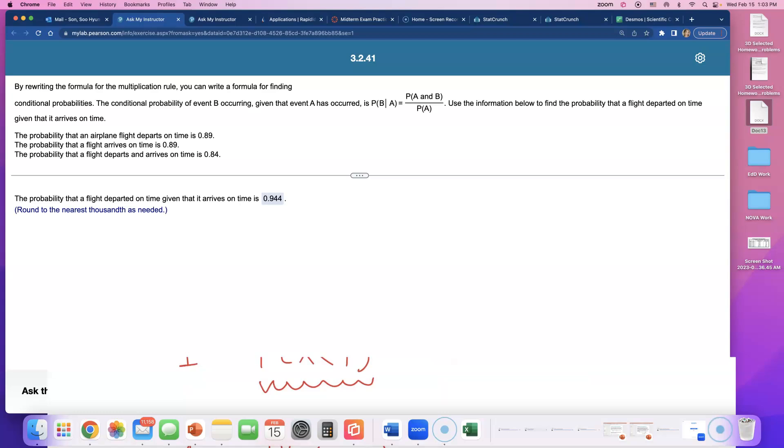By rewriting the formula for the multiplication rule, you can write a formula for finding conditional probabilities. The conditional probability of B happening given A already happened is the fraction where you put the probability of both of them happening on top and probability of A happening in the bottom.